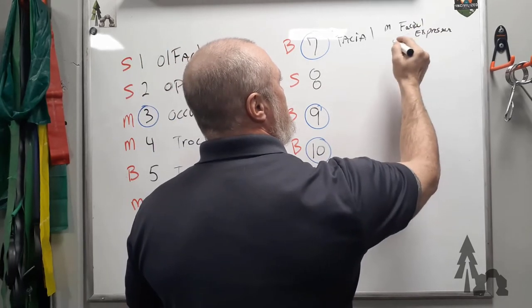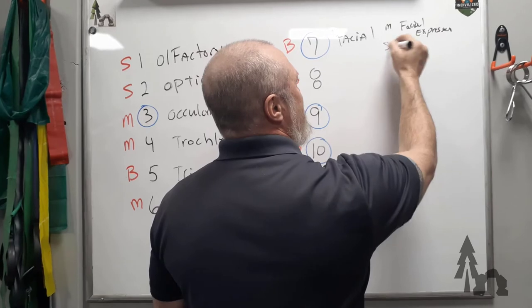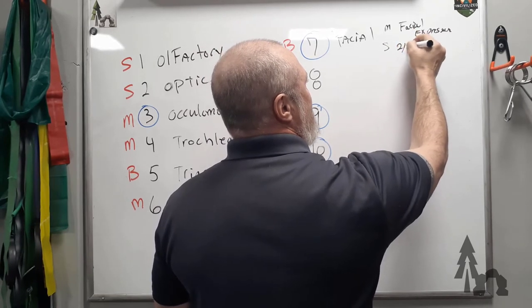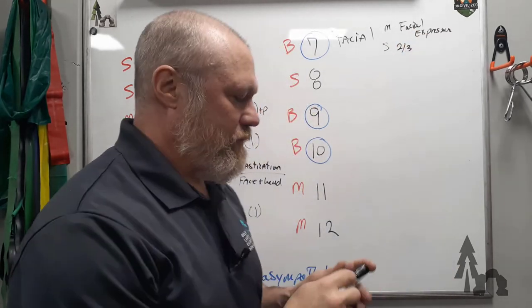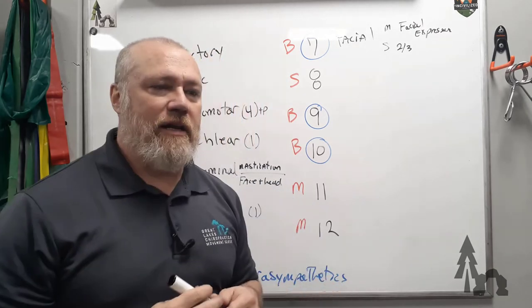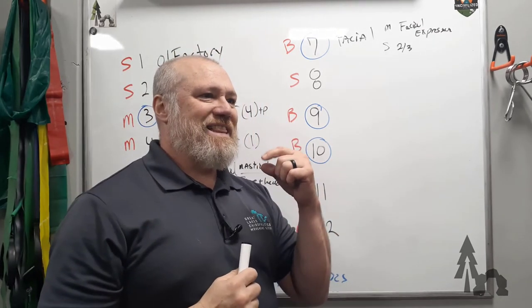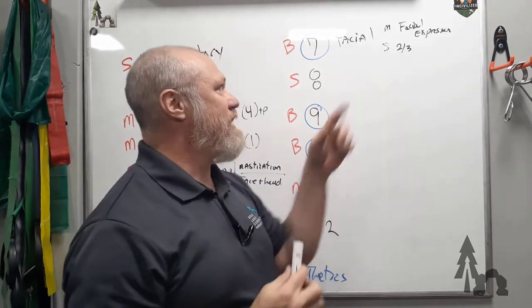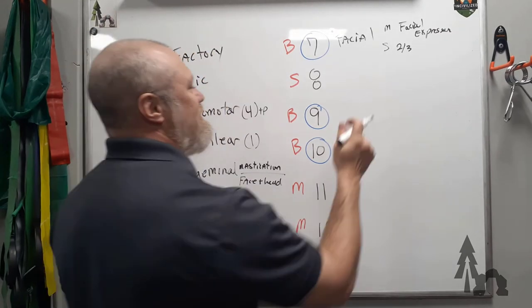And its sensory is the anterior two-thirds of your tongue. So when you bite the tip of your tongue, that's the facial nerve. It also carries taste from the anterior two-thirds of your tongue.